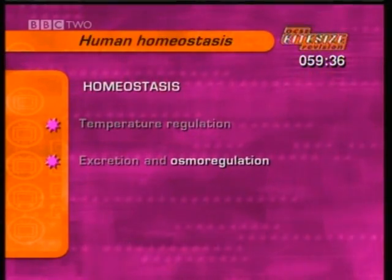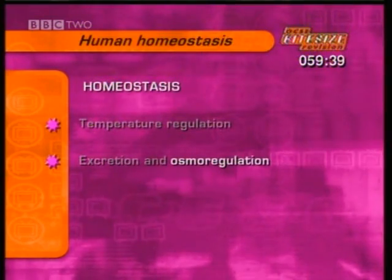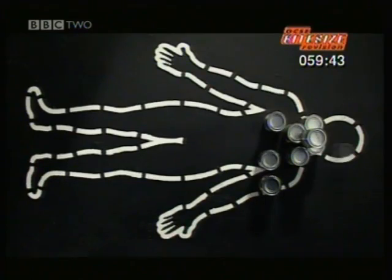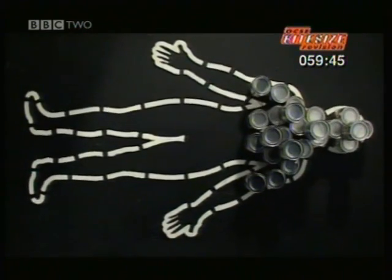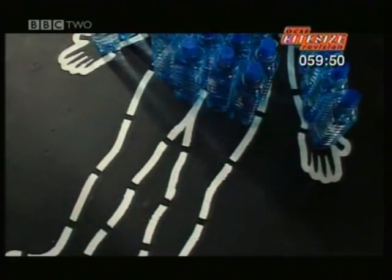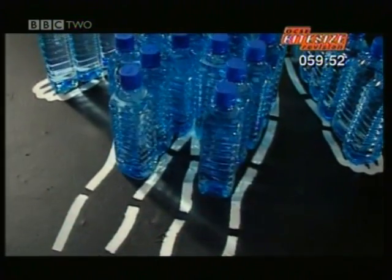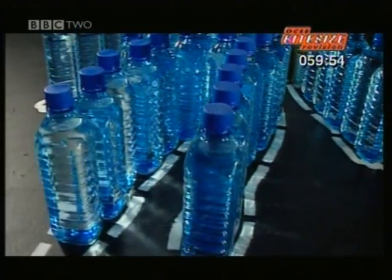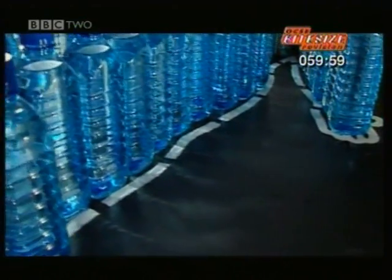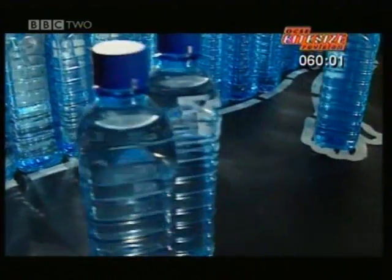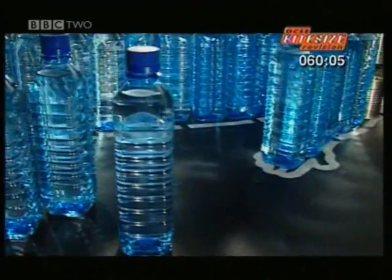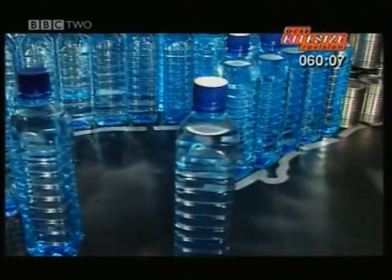Next, osmoregulation — how the water levels in the blood are regulated. Only a third of the human body is made from solid material; two thirds is water. Blood and body fluids make up about 45 litres in an adult. Every day we pass out a couple of litres in urine, sweating takes up to another litre, and moisture in our breath uses still more.